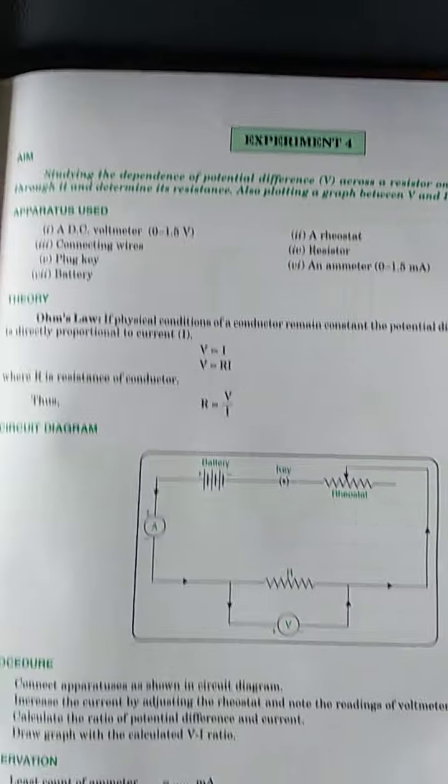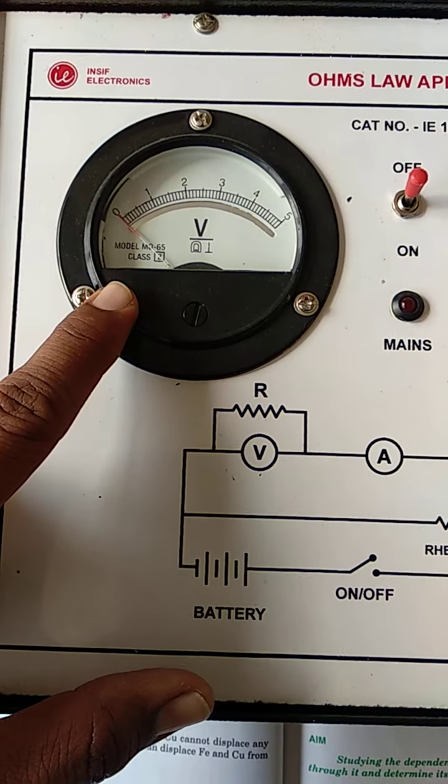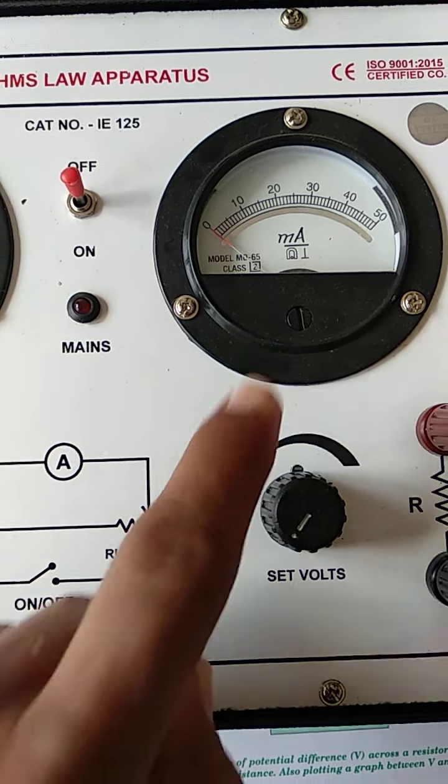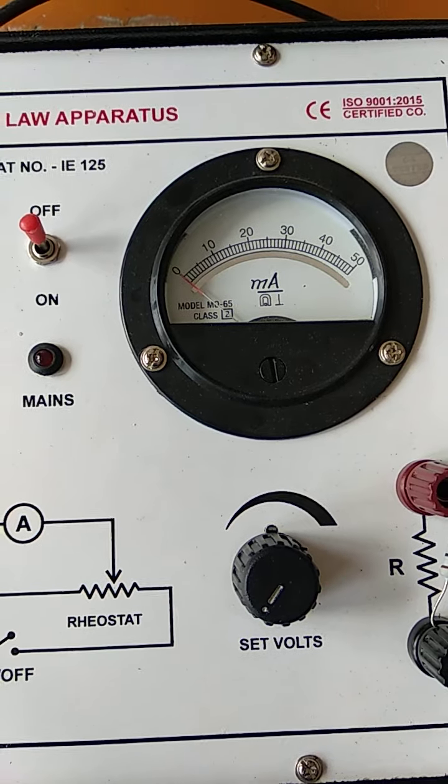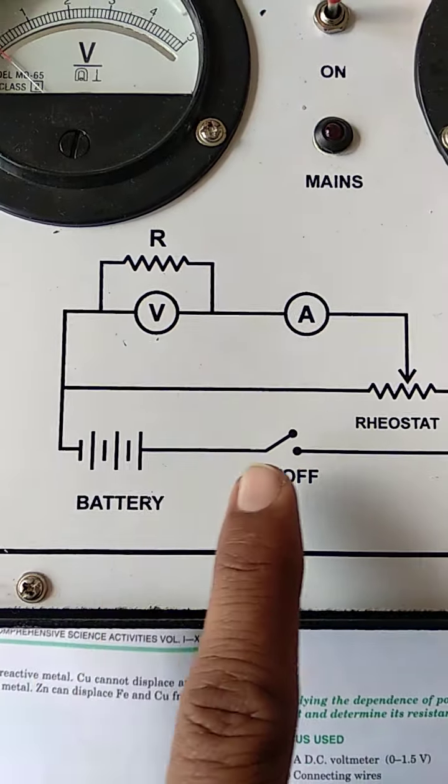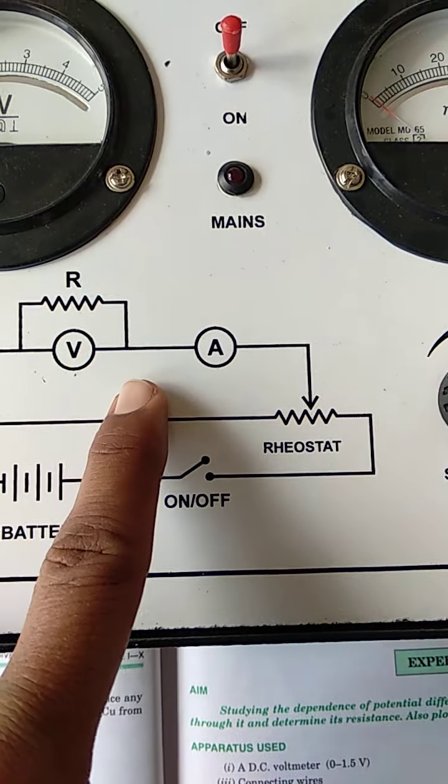So I have an instrument with me, you can see here. It has already voltmeter which is attached here. This is milliammeter which is attached here. So why we are using this milliammeter? Because milliammeter can measure a very small amount of current. This is the circuit diagram, it has battery, on-off key, rheostat is there, ammeter, voltmeter and resistance.